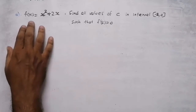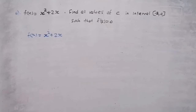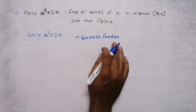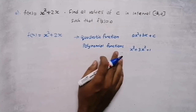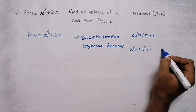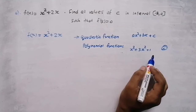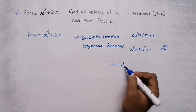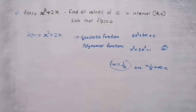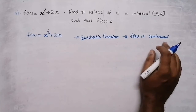Now our question: f(x) = x² + 2x. Find all values of c in interval (−2, 0) such that f'(c) = 0. First, we need to check that the given function satisfies all three conditions. Since our function is a quadratic function, it is always continuous. All quadratic and polynomial functions are continuous — polynomial means there are no negative powers. So since our given function is a quadratic function, f(x) is continuous — first condition satisfied.